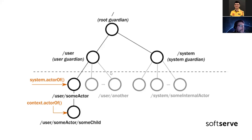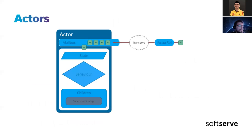For the user guardian, it's actually the parent of all actors which we are creating by our code using system.actorOf or context.actorOf. Each actor has a unique path by which we can actually send it a message. In scope of my demo I will present some projects with an actor system where we can look more closely at how actors are actually sending messages to each other.